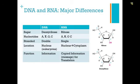And then finally, when we come down here to this last row, function is different. The DNA is information. It's our permanent source of information, whereas RNA is really just a copied piece of information, a message that we're going to use further for translation.